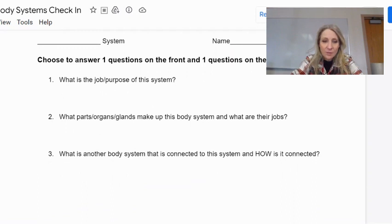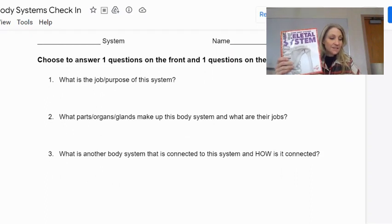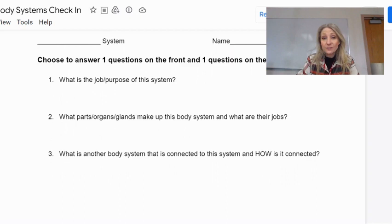Number one is what is the job purpose of the system? You have chosen a body system: skeletal, muscular, respiratory, nervous, or circulatory. You have picked a system.